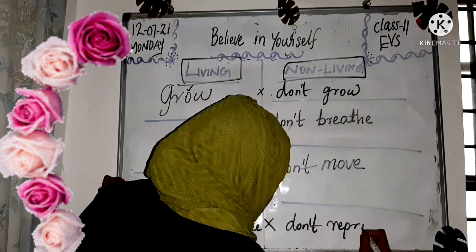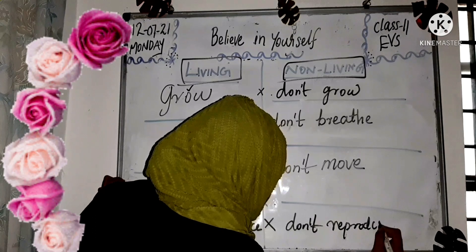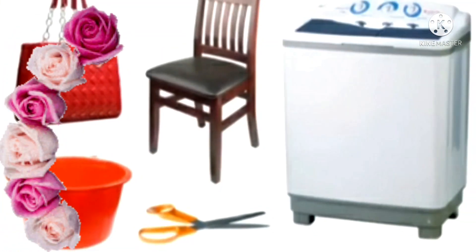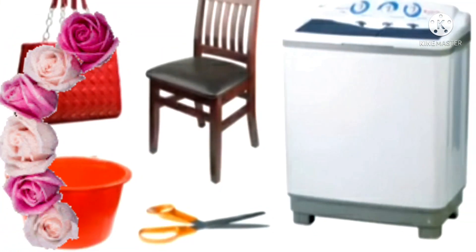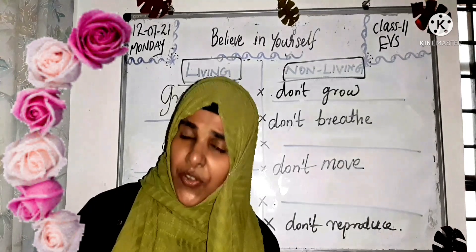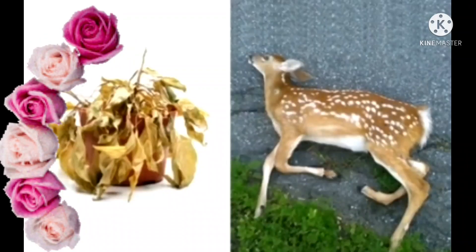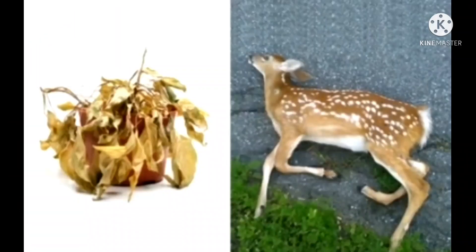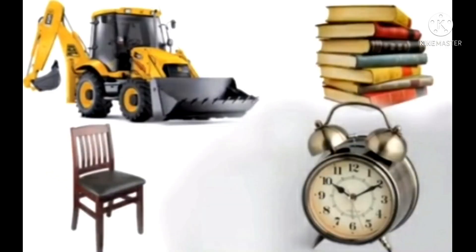Non-living things like toys or a car — they cannot reproduce. Also, living things grow old and die, but non-living things do not grow old and die.